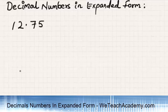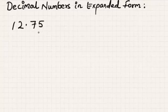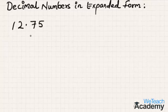Welcome to vteachacademy.com. In this presentation we are going to discuss how to express decimal numbers in expanded form. Here we have a decimal number 12.75. Let us find the place value of each digit.